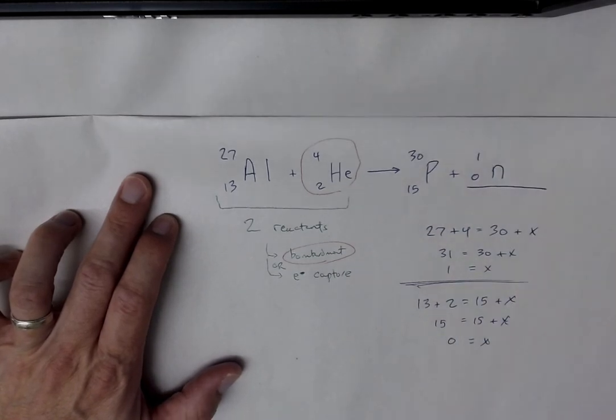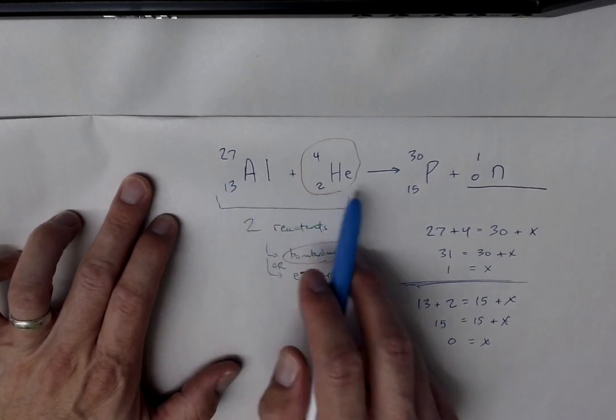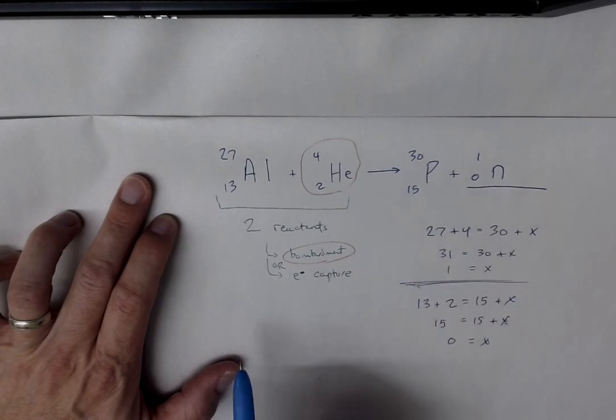So when aluminum-27 is bombarded with an alpha particle, it produces phosphorus and a neutron.